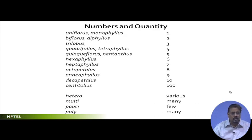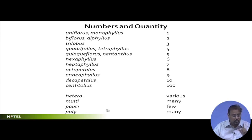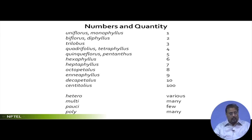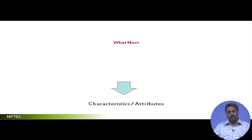The last of these nomenclature terms covers numbers and quantity. Uniflorus means one, biflorus is two, trilobus is three, and so on. Decem means ten. Hetero means various, multi means many, pauci means few — remember paucity means few — and poly means many. You remember Polyalthia longifolia: the poly part means many. Whenever you are trying to know about plants, try to read through this list more intensively. The characteristics and attributes I will be discussing in my next lecture. Thank you very much.